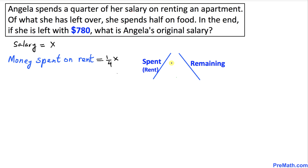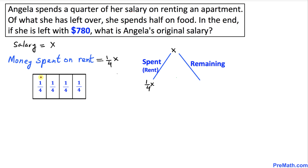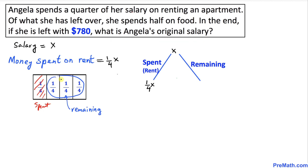Let me explain it a little bit differently. At the beginning, Angela's salary is X amount of dollars and the money spent on renting an apartment is one-fourth of X. Now we want to find out the remaining amount. From our visual chart, we spent one-fourth of the salary, so the remaining amount is going to be three-fourths of X.